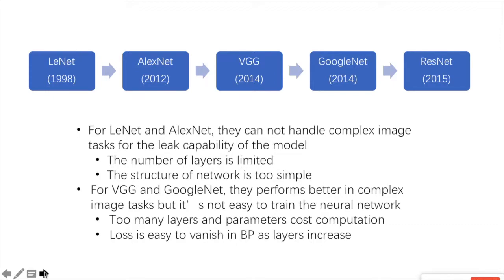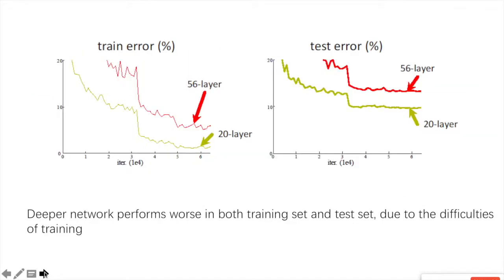This is an image classification task. We have already learned from the course that there are many classical CNN structures for image classification, and both will have some advantages and some shortcomings. As the picture shows, theoretically, deeper network models with higher capacity should have lower training errors. But the result shown here is the opposite. This is caused by the training difficulties in deeper network models. In the backward propagation step, the gradient will become very small when it passes back to the former layer using the chain rule, leading to almost no update of the parameters in former layers.